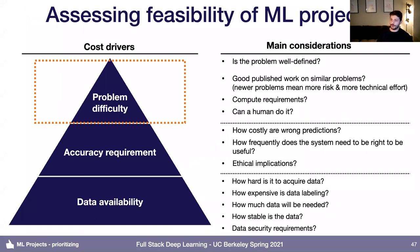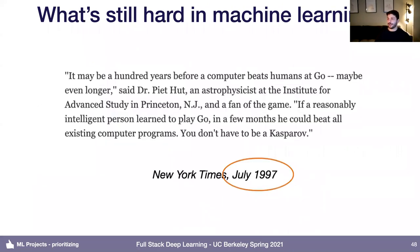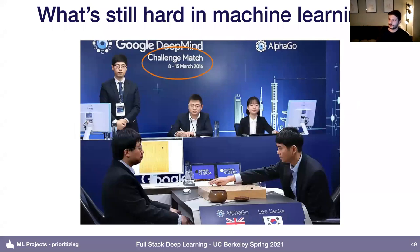I also want to talk about assessing intrinsic problem difficulty — what's still hard to do in machine learning. I want to strongly caveat this: it's historically very challenging to predict what types of problems are going to be difficult for machine learning to solve. For example, an article from the New York Times in the late 90s said it might be 100 years before computers beat humans in Go. But fast forward less than 20 years, and DeepMind built the first machine learning system to beat humans in Go. These predictions about what's going to be challenging are notoriously tricky to make.